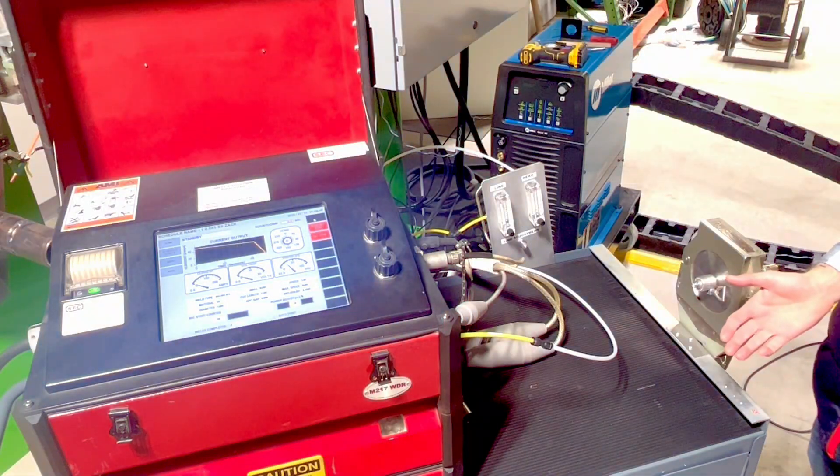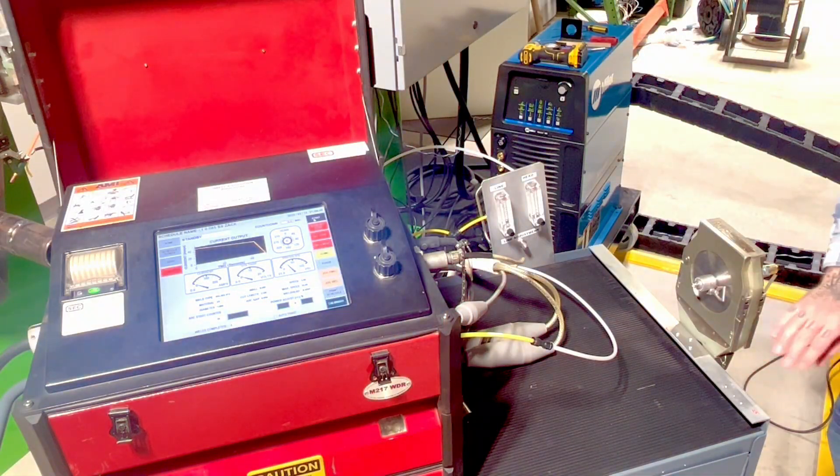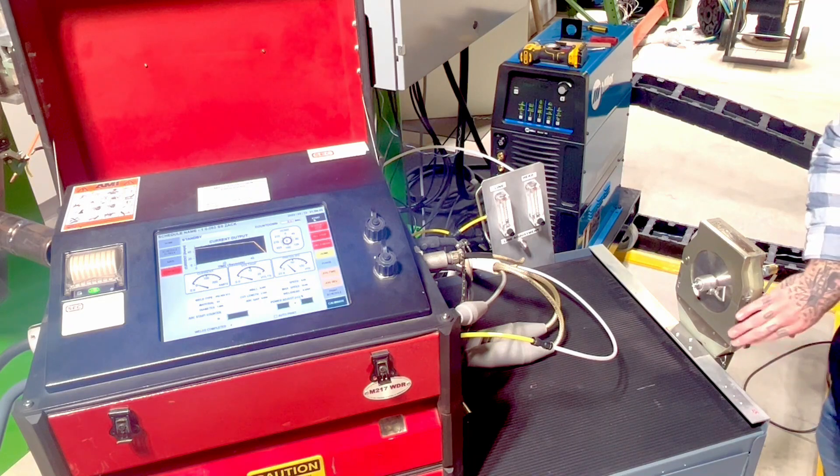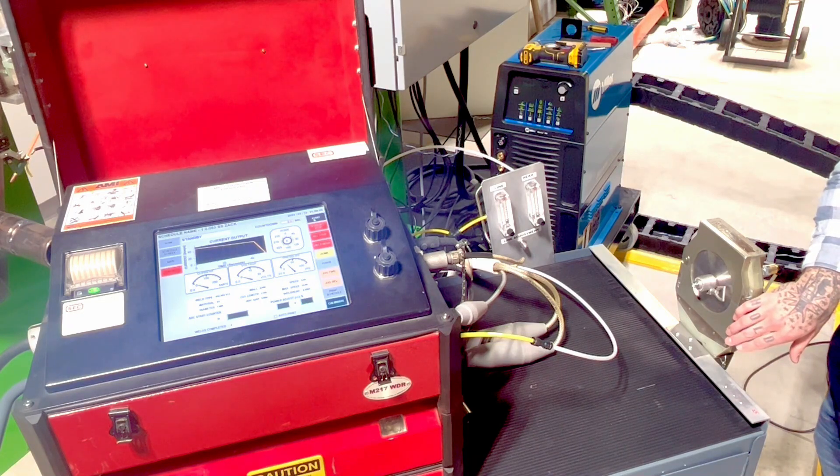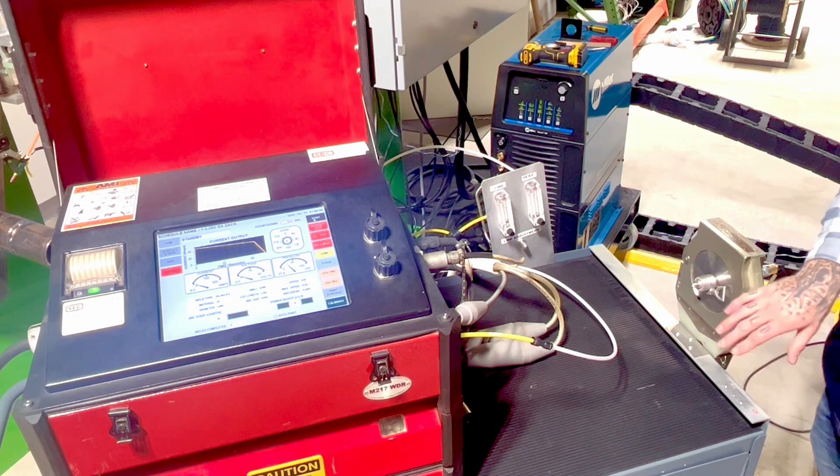After you complete the weld, you want to make sure that as it's post-purging that you keep the weld head closed. This is so that you don't damage the rotor or break the tungsten.